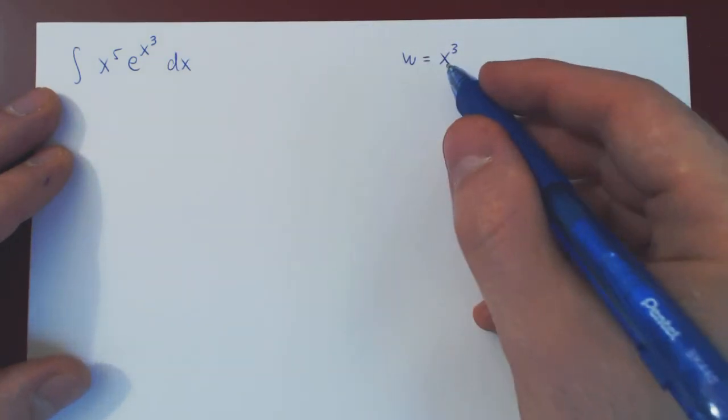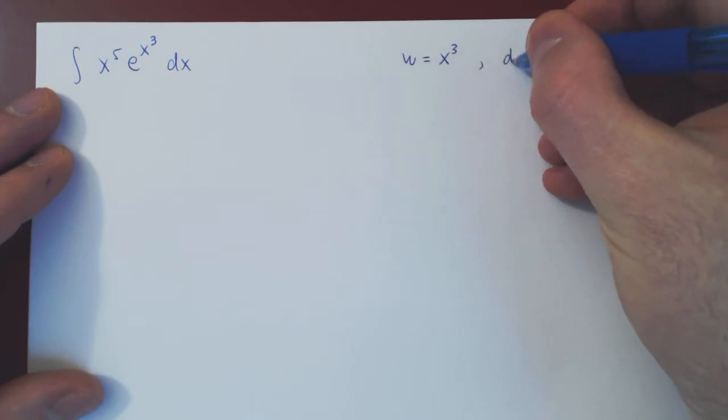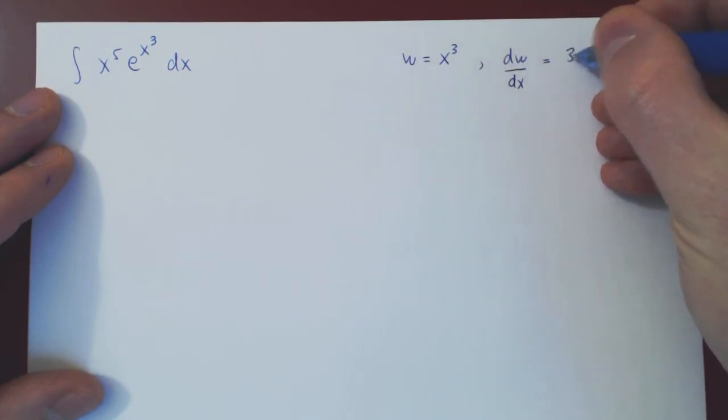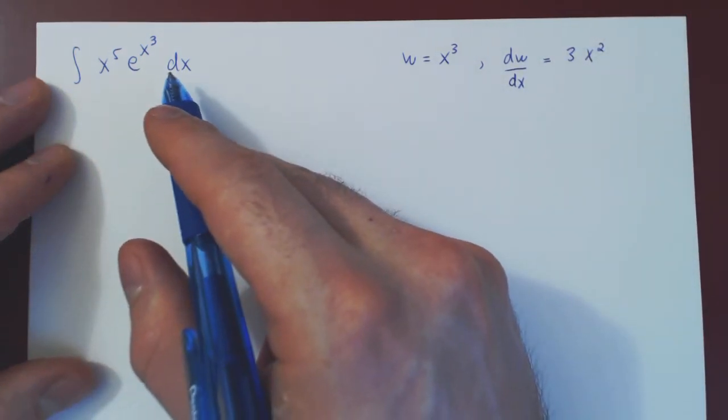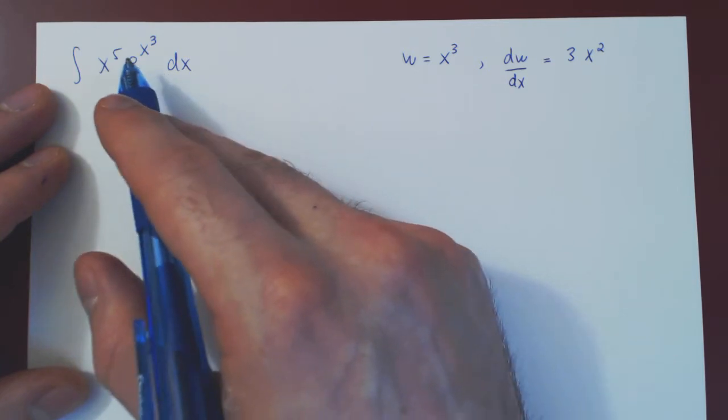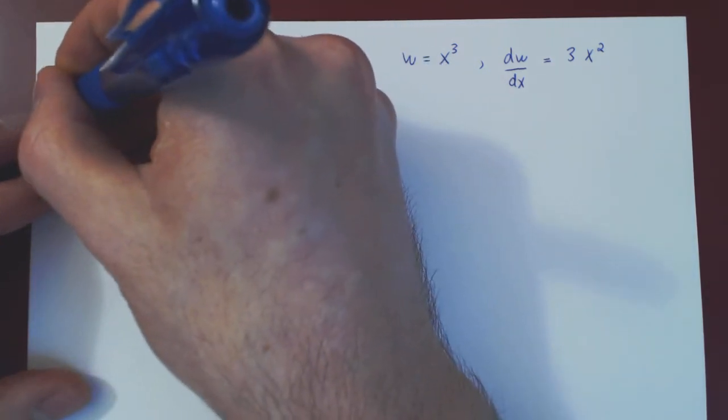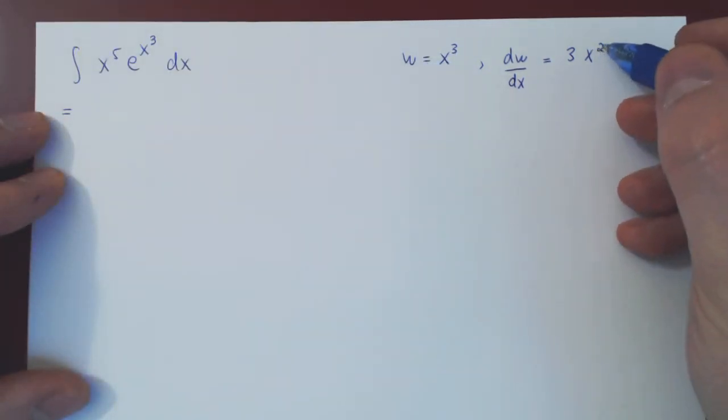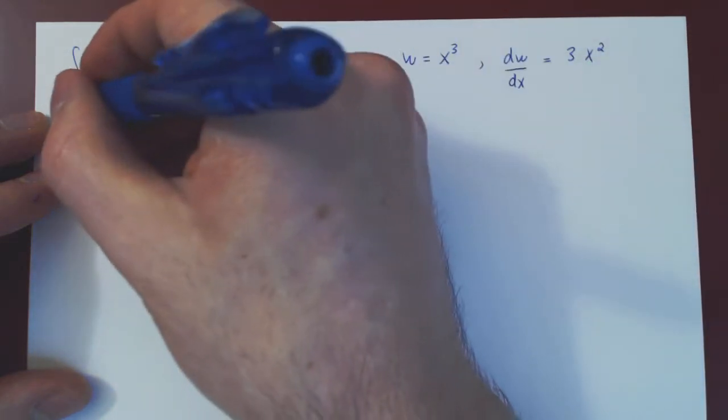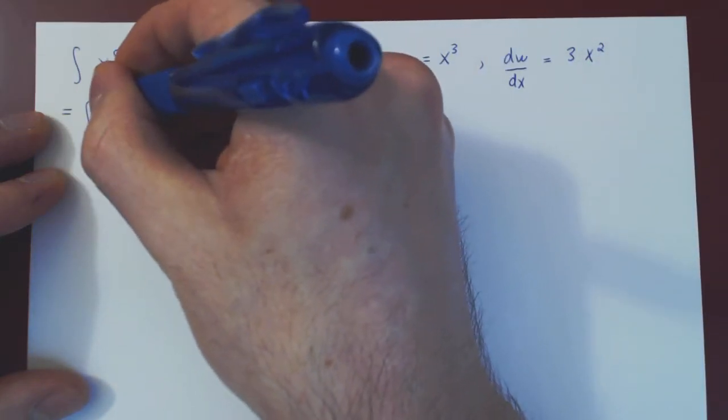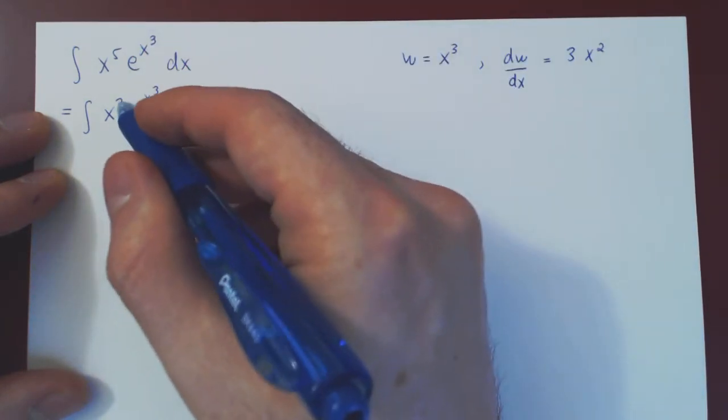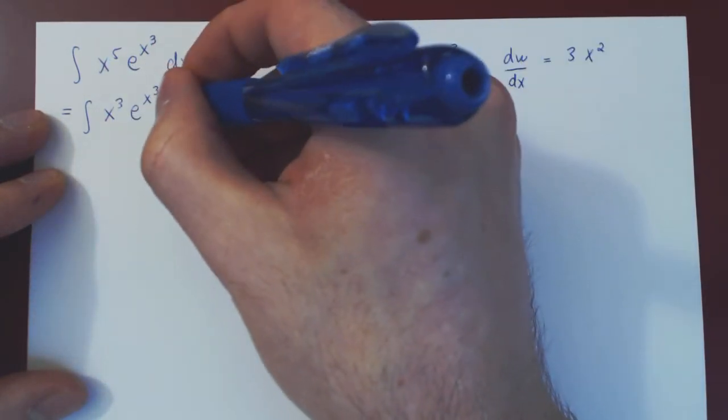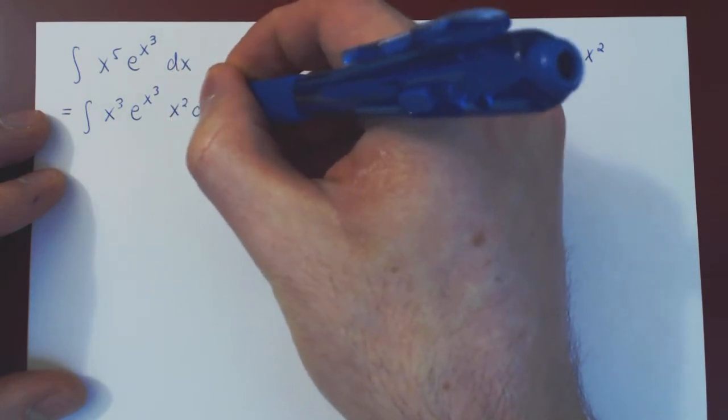To get our dx, we must differentiate, so the derivative of w with respect to x is quite simply by the power rule 3x squared. So, let's see now. If I rewrite x to the 5, the differential giving us an x squared. So, I'll leave an x cubed up front, e to the x cubed. But now, to complete my x to the 5, I'm missing an x squared. So, it's x squared dx.